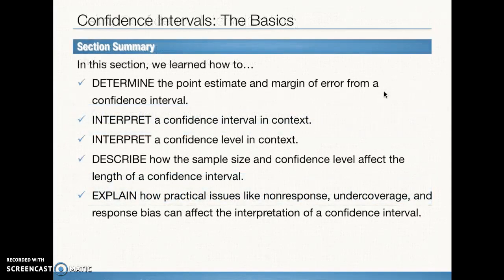Our basics section is over. In this section, we learned how to determine the point estimate — halfway between the lower and upper boundaries of the confidence interval — calculate a margin of error, interpret a confidence interval and confidence level in context using templates, describe how sample size and confidence level affect the width of a confidence interval, and explain how non-response, undercoverage, and response bias are problems with the data itself and unrelated to the margin of error. That's it for section one — see you in section two.